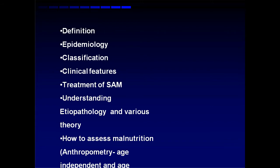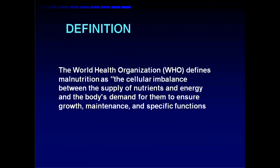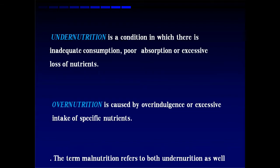Let us go with the definition of protein energy malnutrition. As per WHO, malnutrition means there is cellular imbalance between the supply of nutrients and energy and the body's demand for them to ensure growth, maintenance and specific functions. Undernutrition is a condition where there is inadequate consumption, poor absorption or excess loss of nutrients. Overnutrition is caused by overindulgence or excess intake of specific nutrients. The term malnutrition refers to both undernutrition as well as overnutrition.